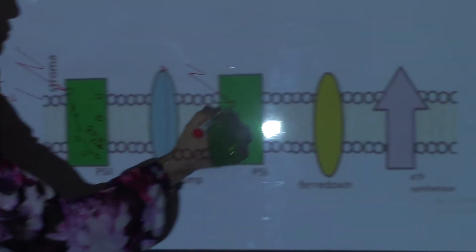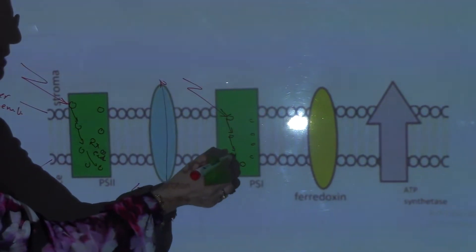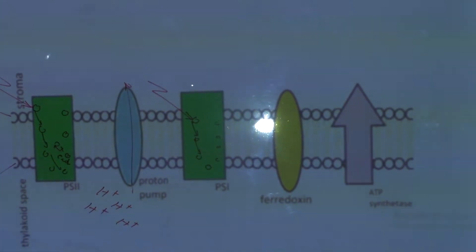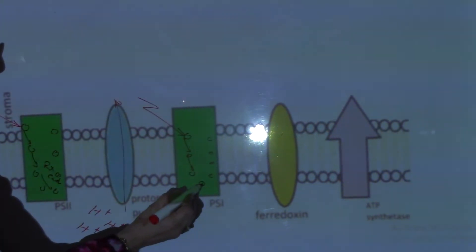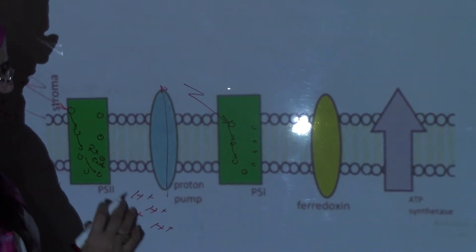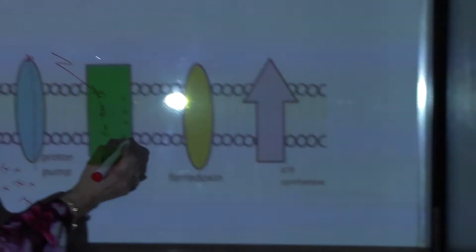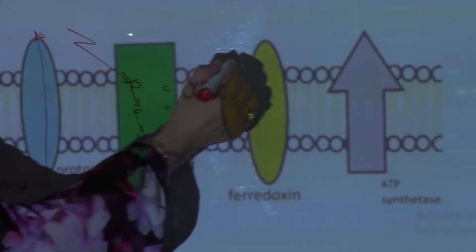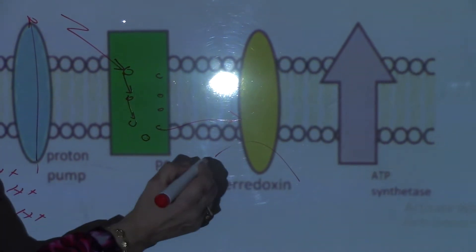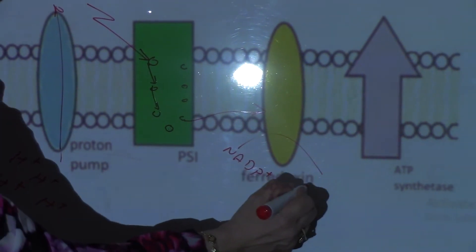Light falls also on the chlorophyll molecules in photosystem I, exciting the electrons. The electron passes from one chlorophyll to the next until it reaches the reaction center. Instead of the electron being taken by a group of electron carriers as in photosystem II, it will be taken by ferredoxin. Ferredoxin then generates reduced NADP — converting NADP+ into reduced NADP (NADPH + H+).